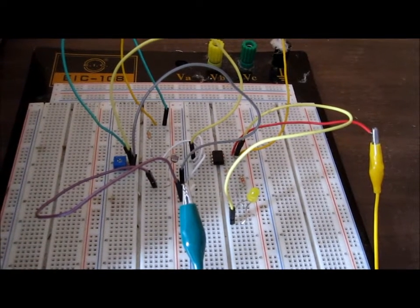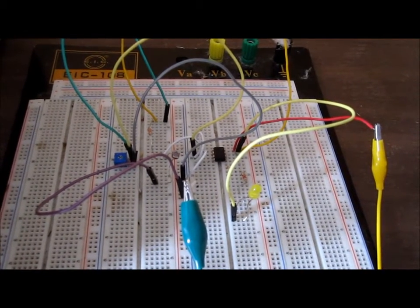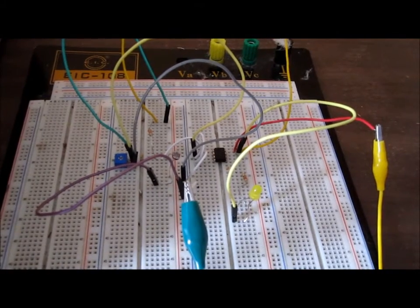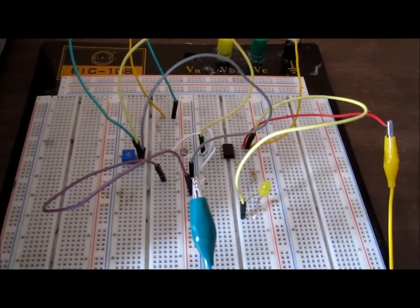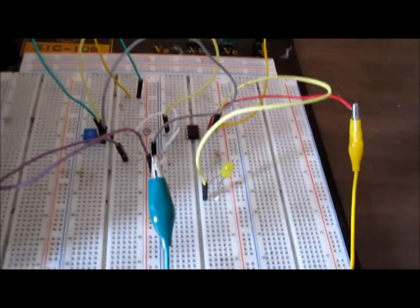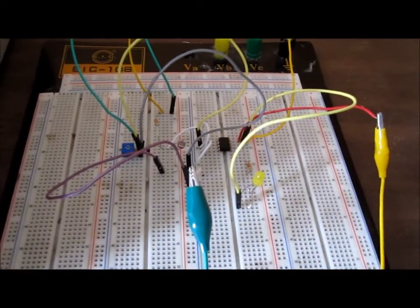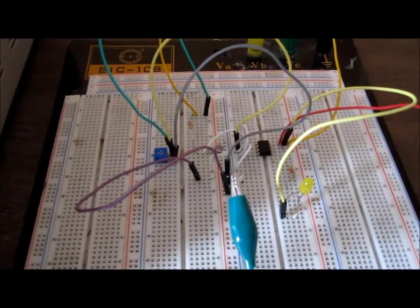Hey guys, this is the LM311 voltage comparator circuit and this circuit functions as a nightlight circuit, meaning that when the circuit detects darkness or dark lighting, then the output turns on.